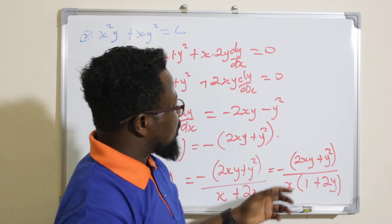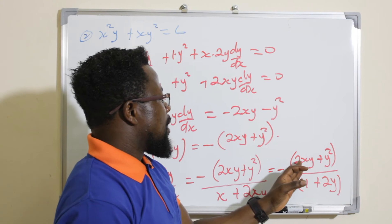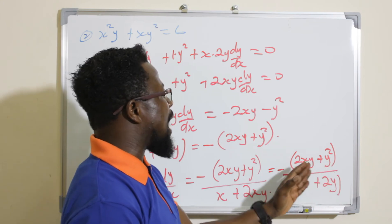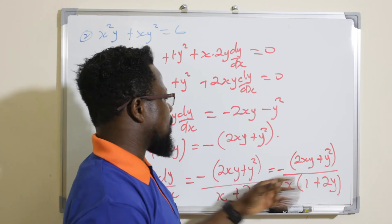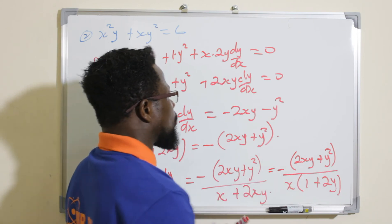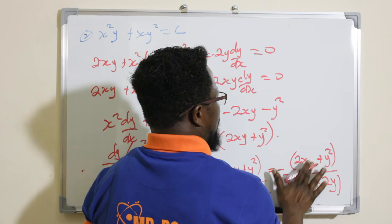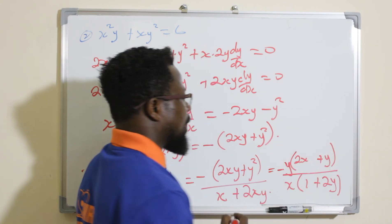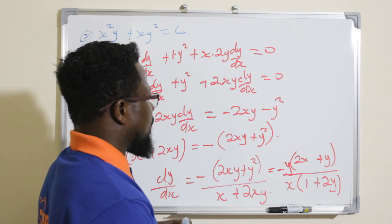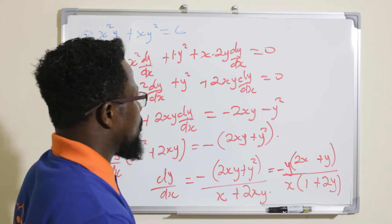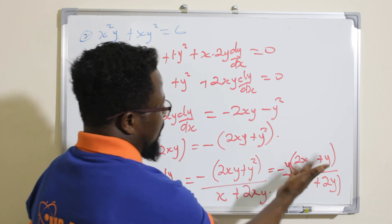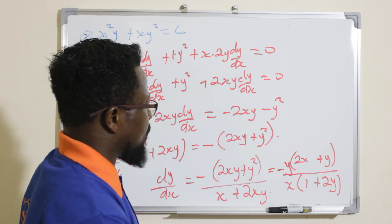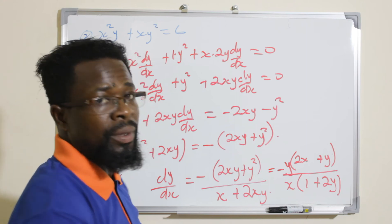We can factor x from the denominator and y from the numerator, but since nothing cancels we can leave it as is or simplify optionally. The final answer is dy/dx = −(2xy + y²) / (x² + 2xy).